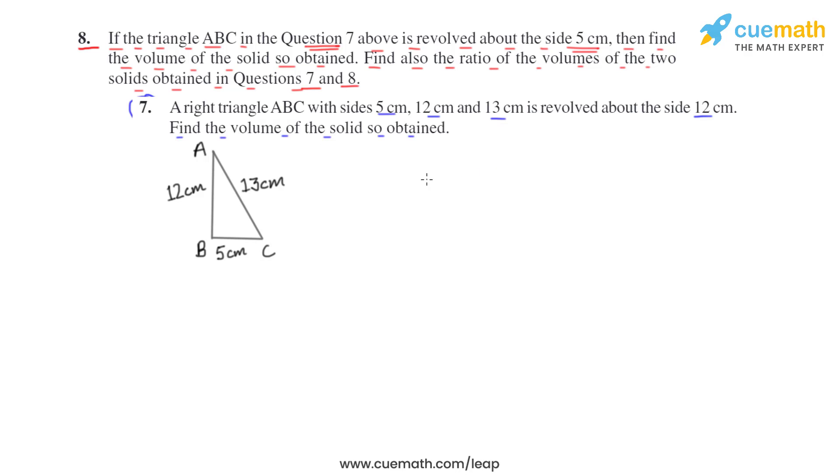It was revolved about the 12 centimeter side, but in question 8 they are saying that it is revolved about the 5 centimeter side. Now there is a right triangle, the same right triangle, instead of revolving it about 12 centimeters, it is revolved about 5 centimeters.